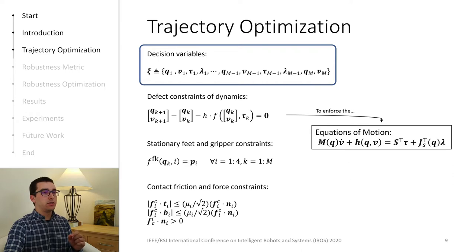As such, the decision variables of the numerical optimization are the joint positions and velocities at every point, as well as the torques commanded to the robot and the ground reaction forces. In this slide, they are shown as q, v, tau and lambda.